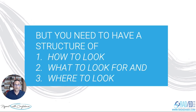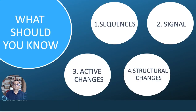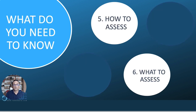In order to do that, you really need to have a structure, and that's the structure we're going to go through in this talk. We're going to look at how to look at a scan, what to look for, and where to look for these things. You should have an understanding of the sequences, what the different types of signal abnormalities are, how to interpret them as either active changes or more chronic structural changes, and then have a structure of how to assess the scan.